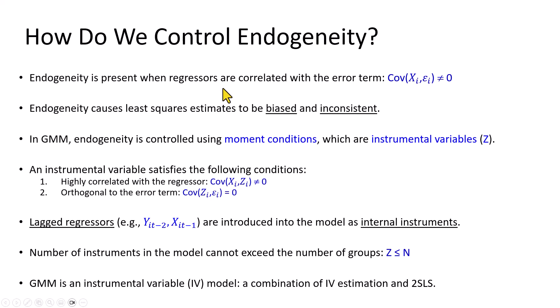So how do we control endogeneity in the model? Well, again, endogeneity is present when regressors are correlated with the error term, which causes our results to be biased and inconsistent. In the GMM environment, endogeneity is controlled by using what's called moment conditions, which are instrumental variables satisfying these two conditions.